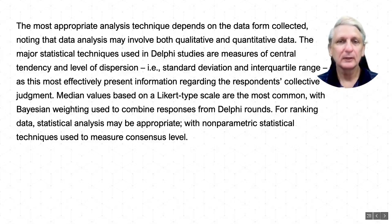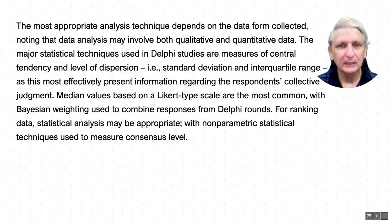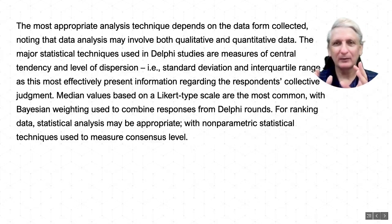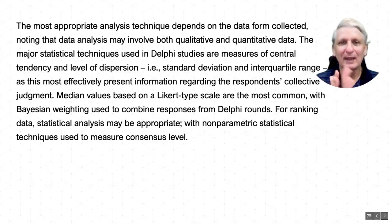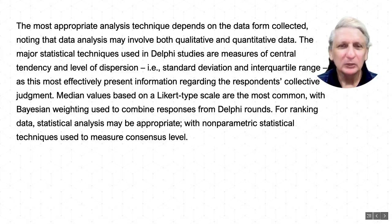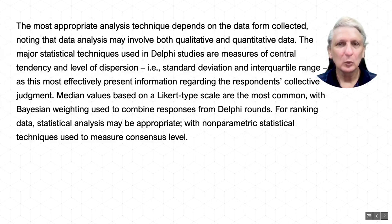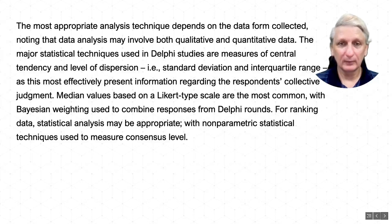We also look at the concept of median values when getting a group of responses around several options — so if participants are choosing say one to five on a Likert scale, a median value is not just the average but looks at the spread over the number of responses. These terms can be important when we come to analyse, but in the main we think about what we want to actually say and then we use the mathematics to support those arguments.